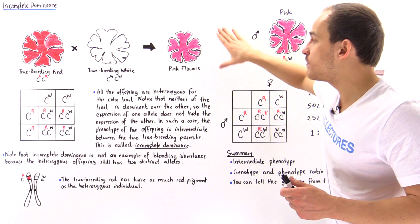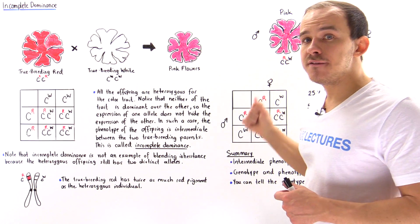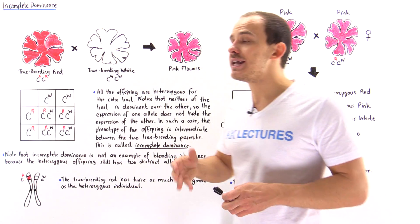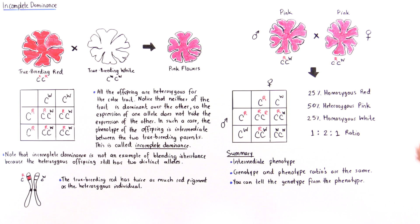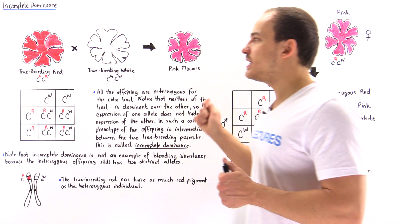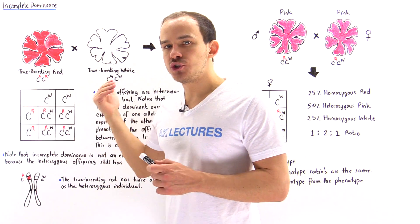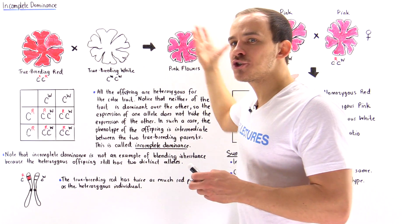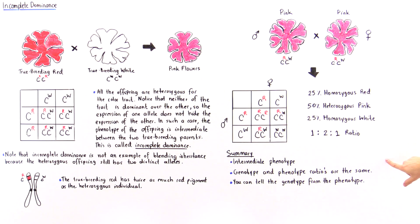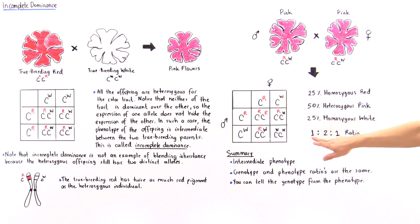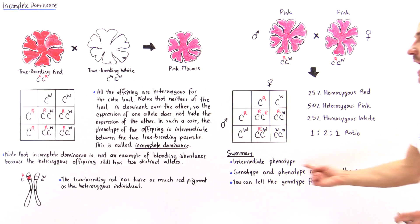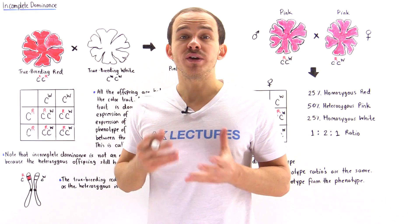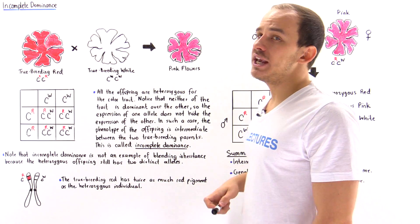If we know that the phenotype of this flower is pink, then we know this individual has two alleles — one red allele and one white allele. Three important things to remember about incomplete dominance: Number one, if we cross true breeding plants for two different types of alleles, the product will be intermediate between those two phenotypes. Number two, the genotype and phenotype ratio are exactly the same — a one-to-two-to-one ratio for both. And finally, just by knowing the phenotype, we can determine exactly what the genotype is whenever we're dealing with incomplete dominance.